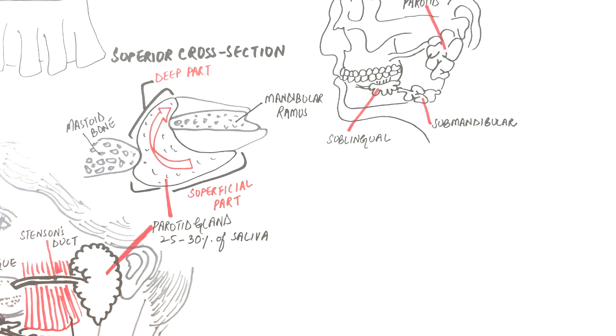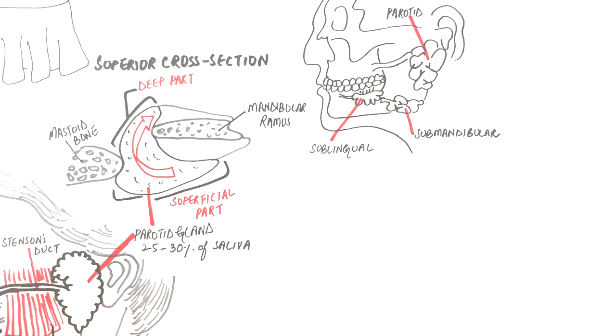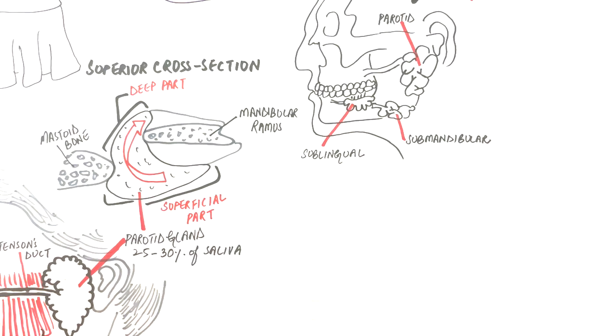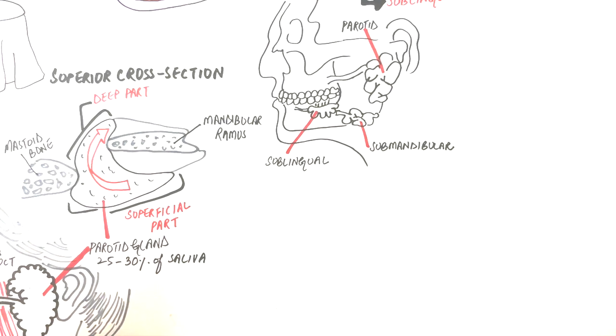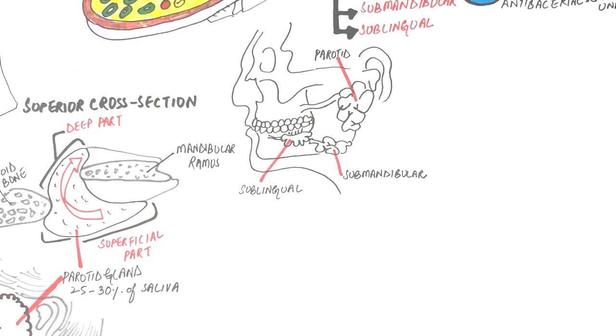The blood supply of salivary glands is done by branches of external carotid arteries. Coming to the innervation of the glands, the nerve fibers which innervate these glands are preganglionic and postganglionic fibers.